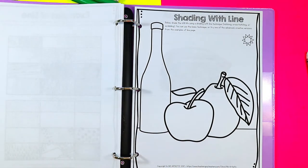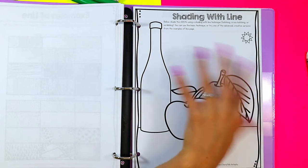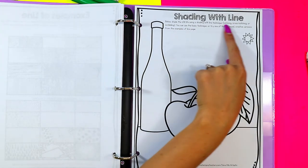And same with stippling as well. There's resources in this booklet for shading with line on, you know, again, a still life, but this time we're using line to shade.